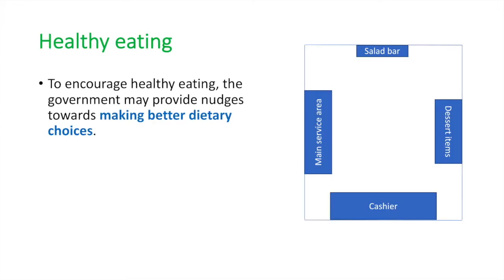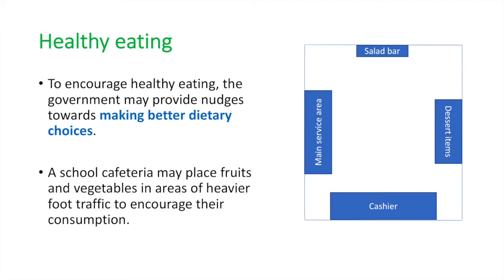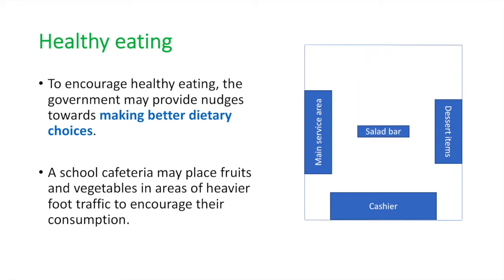To encourage healthy eating, the government may provide nudges towards making better dietary choices. In school cafeterias where students are paying for their own lunch, a school cafeteria may place fruits and vegetables in areas of heavier foot traffic to encourage their consumption. By locating the salad bar in a high visibility and high traffic area, it may encourage students to opt for more salads in their lunch choices.